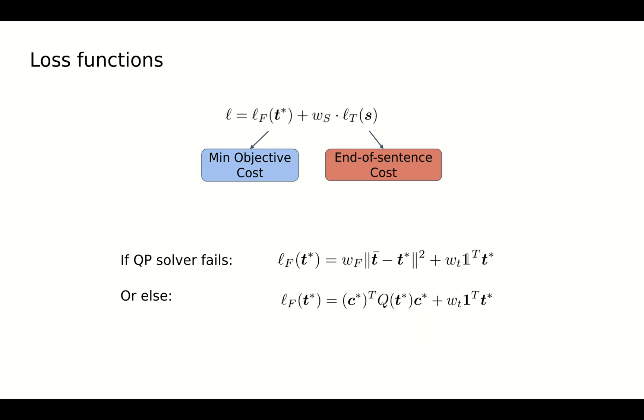However, there are no guarantees that the time allocation is feasible with dynamic constraints. Therefore, we design an alternative loss function for infeasible conditions.